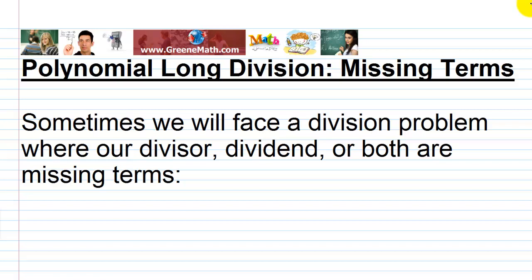For a missing term — for example, if the x squared term is missing — you just write 0x squared. The 0 is just going to act as a placeholder, just as it does in our number system. In this video, we're going to talk about dividing by a polynomial with missing terms, and we're basically going to use the same format to get around this problem.